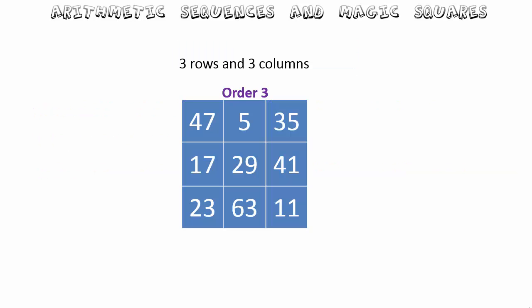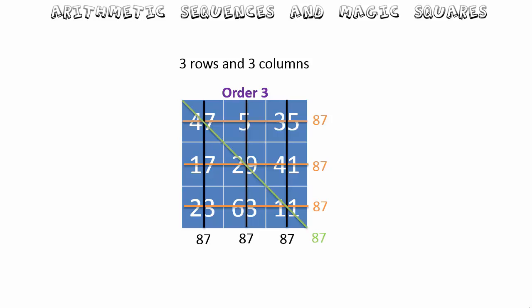Here's an example: this is an order-three magic square, meaning it has three rows and three columns. You can see that the numbers sum to 87 across the first, second and third rows, and also down the first, second and third columns. The diagonals also sum to 87, so this is indeed a magic square of order three.